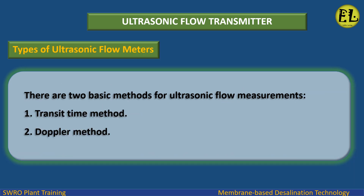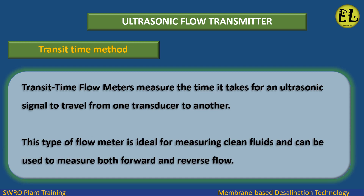Types of ultrasonic flow meters: There are two basic methods for ultrasonic flow measurements — one, the transit time method, and two, the Doppler method. Transit time flow meters measure the time it takes for an ultrasonic signal to travel from one transducer to another. This type of flow meter is ideal for measuring clean fluids and can be used to measure both forward and reverse flow.